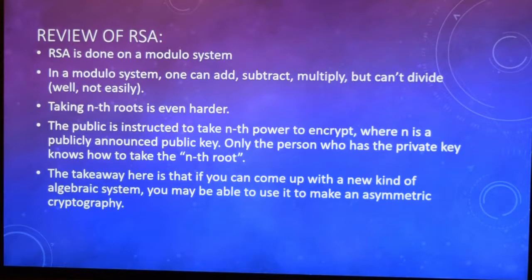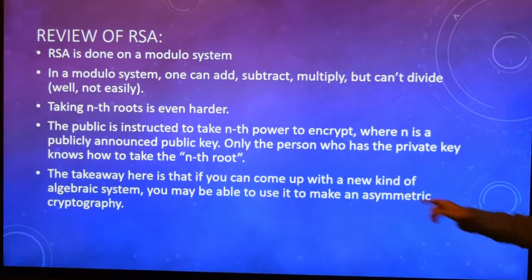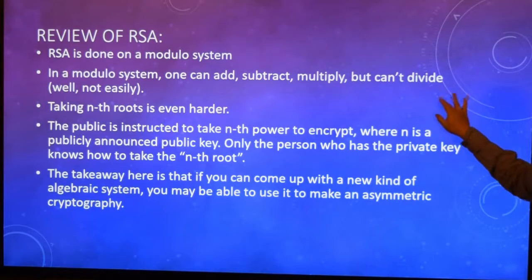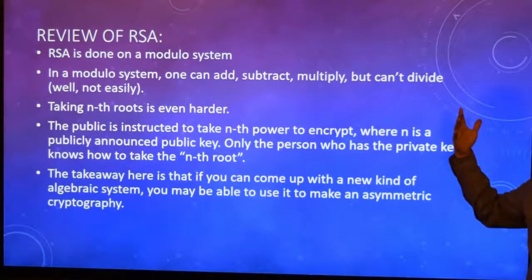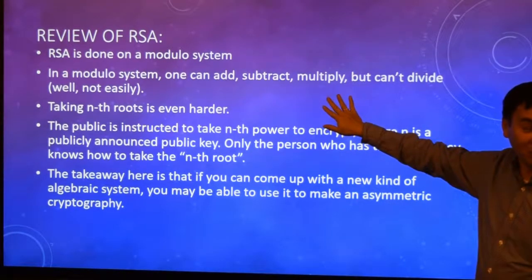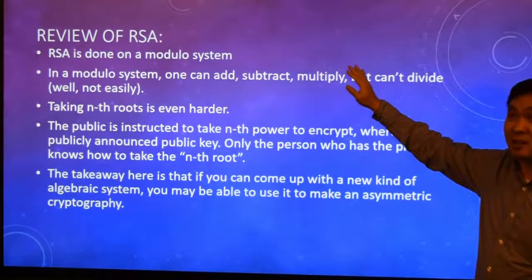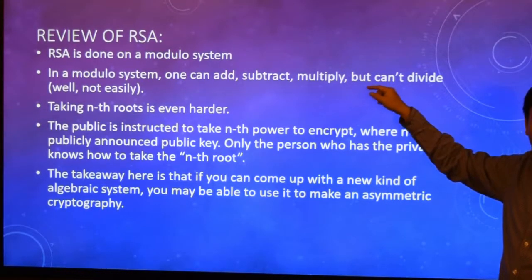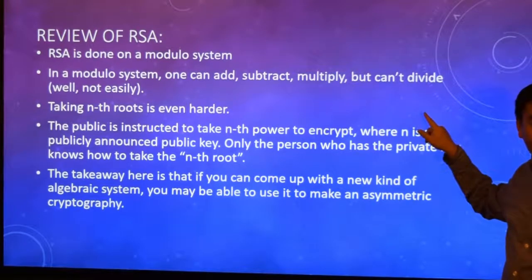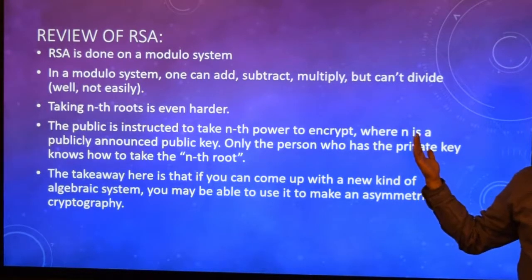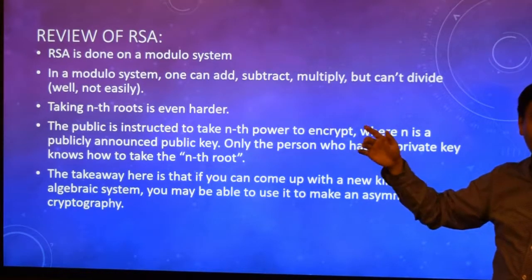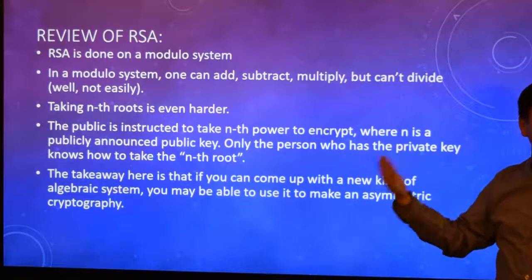In the modular system, taking nth roots is even harder. If you had 4 to the 88th power modulo 115 and got 29 as a result, somebody who saw that 29 and did not know it was 4 exponentiated by the 65537th power would have to take the 65537th root of 29 — and that's impossible to do in the modular system. The only way you can do it is by brute force: starting from 1, 2, 3, 4, 5, trying all numbers from 1 through 115.